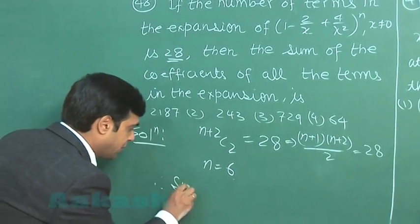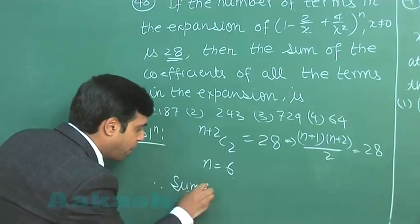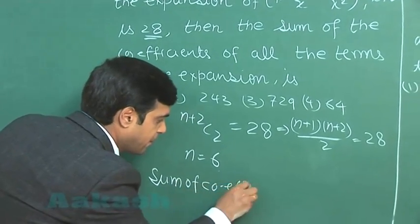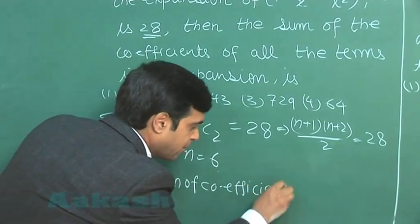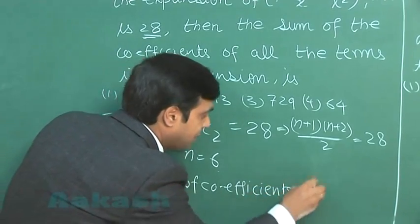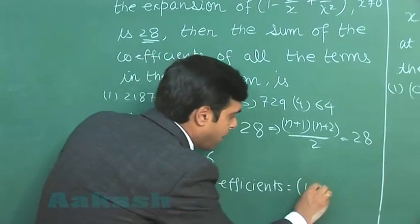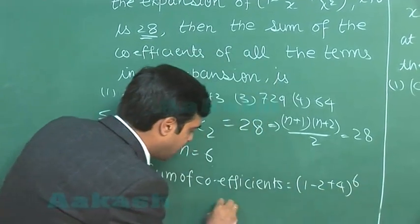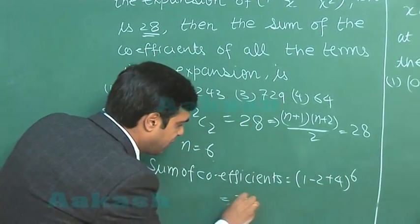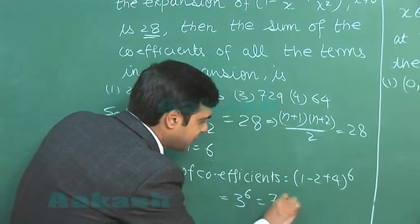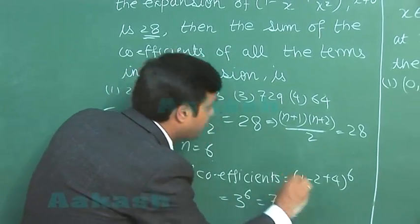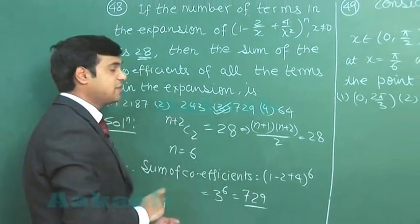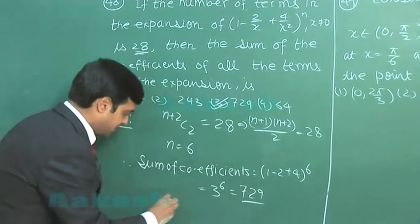The sum of coefficients is (1 minus 2 plus 4) raised to the power 6, which is 3 raised to the power 6, that is 729. So from the given options, option number 3 is correct.